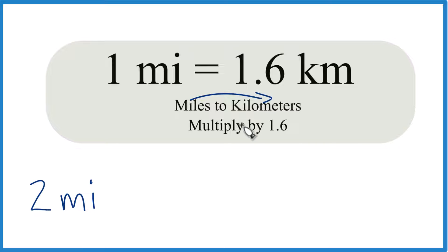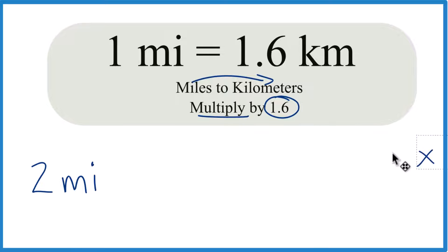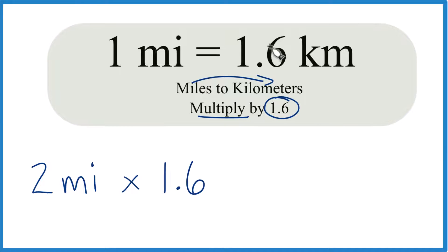When you go from miles to kilometers, you multiply by 1.6. So we're going to take two miles here, we're going to multiply this by 1.6. And that 1.6, that's 1.6 kilometers in one mile, or kilometers per mile.